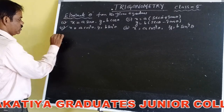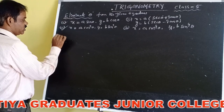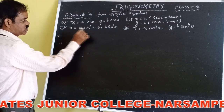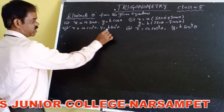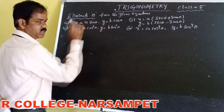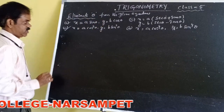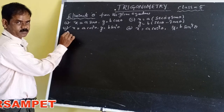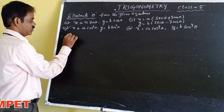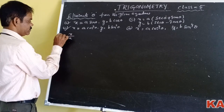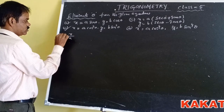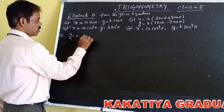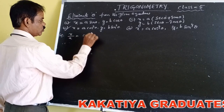Third problem: Given that x = a·cos³θ and y = b·sin³θ. Taking a to the other side, x/a = cos³θ. Whenever we have cos³θ, if we multiply the power by 2/3, then it becomes cos²θ. So, raising both sides to the power 2/3: (x/a)^(2/3) = cos³θ × (2/3) = cos²θ.